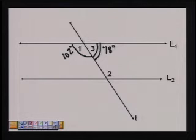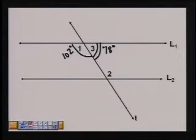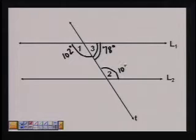We know that angle 1 and angle 3 are supplementary, which means they add up to 180 degrees. We also know that angles 1 and 2 are alternate interior angles, which means they are congruent. Therefore, the measure of angle 2 is also 102 degrees.